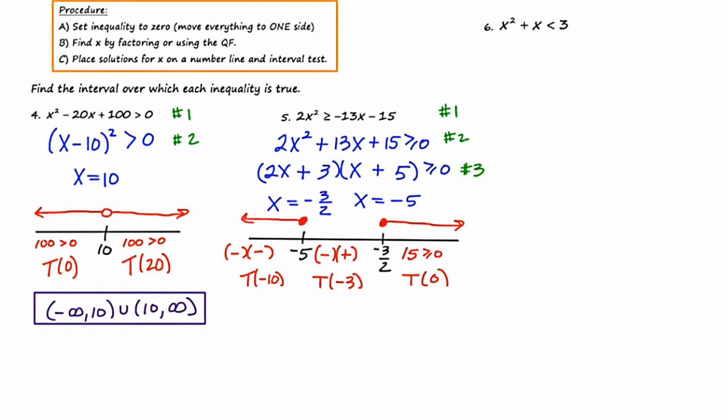So the answer to this inequality would be negative infinity to negative 5, union negative 3 halves to infinity.